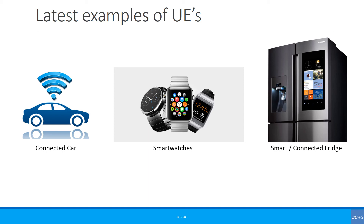If a smartwatch just uses Bluetooth to connect to your smartphone, then it is not a UE. But there are smartwatches with SIM. Most gadgets do have a SIM, and many gadgets will soon have embedded SIM, making them all UE.